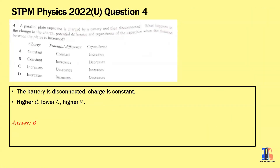Next question from the Ulangan paper — a parallel plate capacitor is charged by a battery and then disconnected. What happens to the charge, potential difference, and capacitance of the capacitor when the distance between the plates is increased?